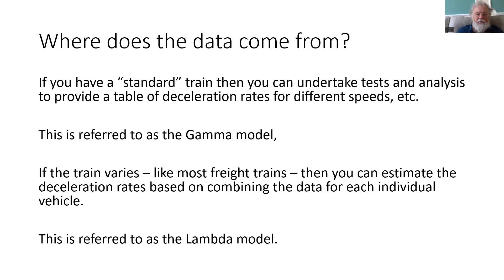However, other types of trains - freight trains particularly - vary in terms of number of wagons, how many locomotives, and whether the wagons are loaded or not. What you can do is estimate the deceleration rates by combining data from each individual vehicle about how heavy it is and how much brake force it can apply. That's known as the lambda model.